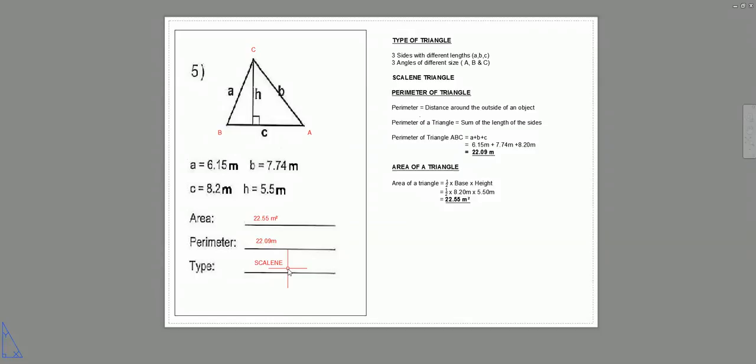Let's move on to perimeter. Distance around the outside of an object, still the same as the previous one. Sum of the lengths of the sides. In this case, each of the sides is a different length. So we can put them into the equation. A plus B plus C, 6.15 metres. Note, different units, so make sure you get your units right. 7.74 metres and 8.20 metres. Put that in, bang that into your calculator, and you get 22.09 metres. That's the distance around that triangle.